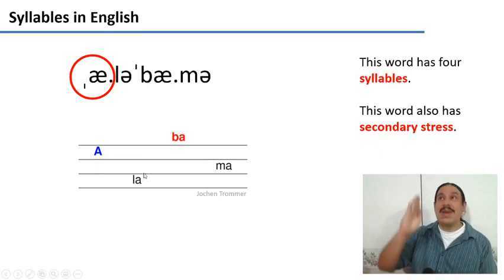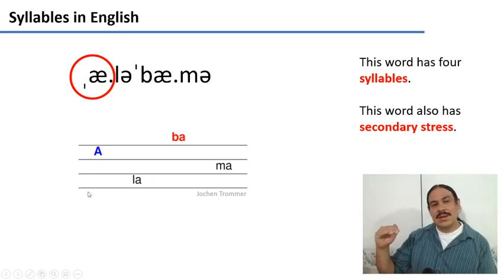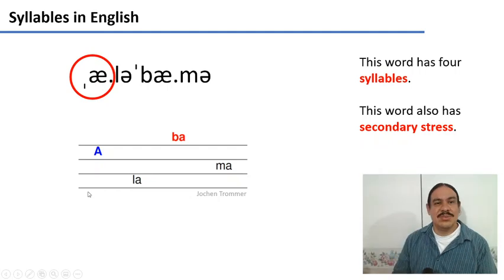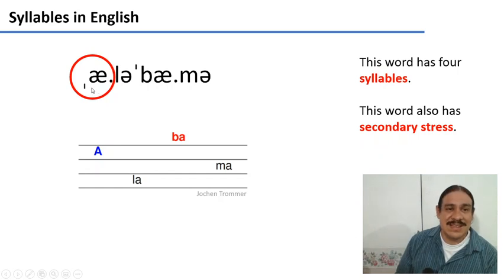So you have Alabama, but it does have a rise in prominence. You can't just say it with the same flatness as you would this one. You can't say Alabama. You need to say Alabama is the word. So words in English have secondary stress and primary stress, which is assigned to the syllable.